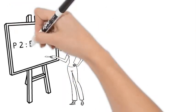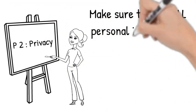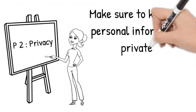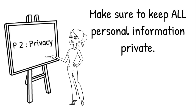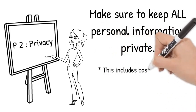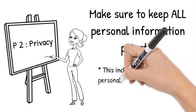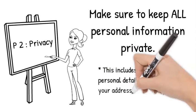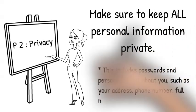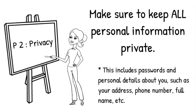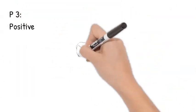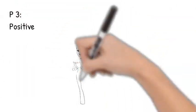P number two: privacy. Make sure to keep all personal information private. This includes passwords and personal details about you, such as your address, your phone number, your full name, and so on.